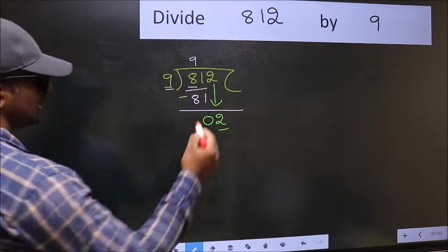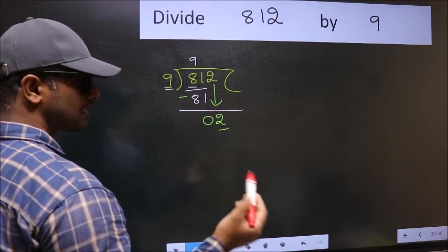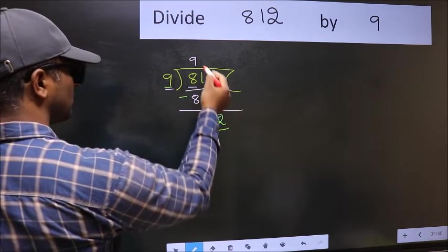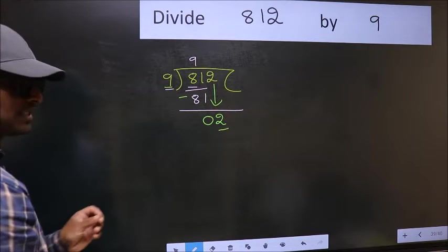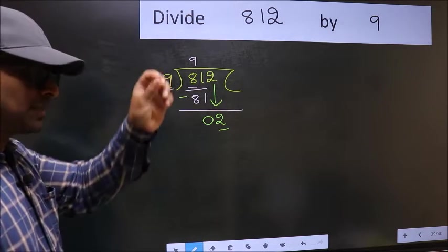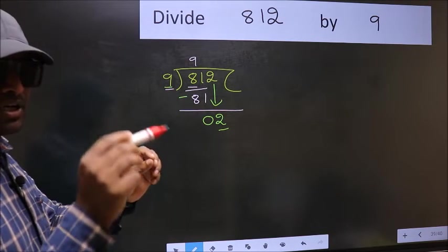Because just now you brought this number down. And in the same step, you want to put dot and take 0. Which is wrong. I repeat. Bringing the number down.